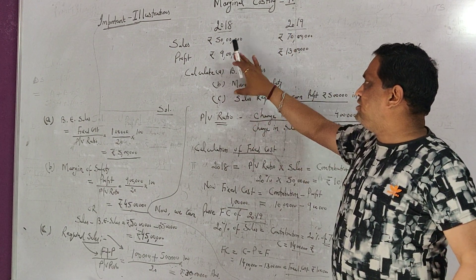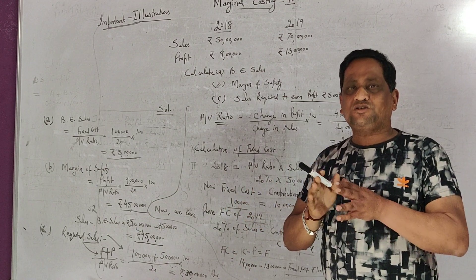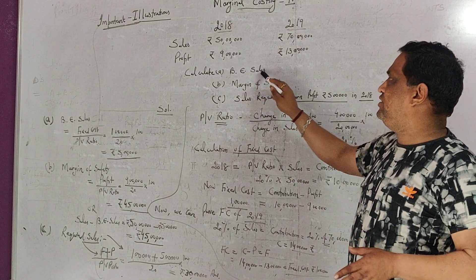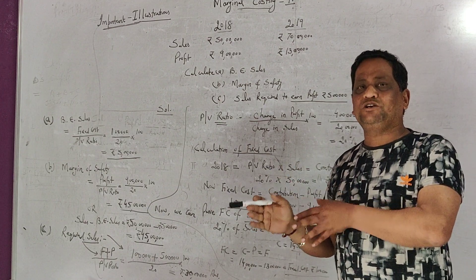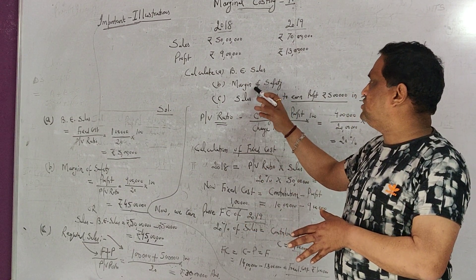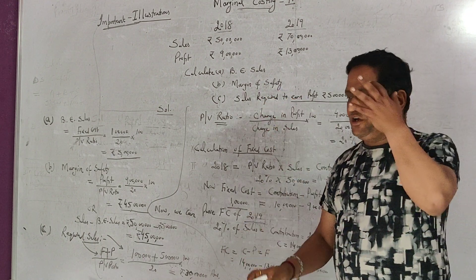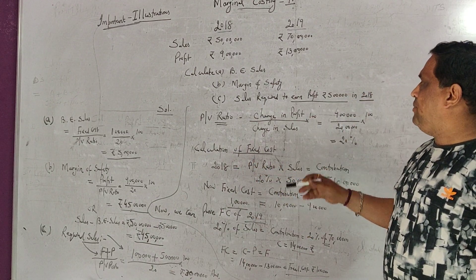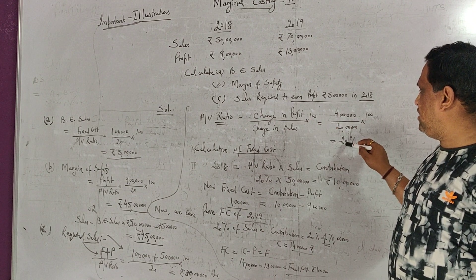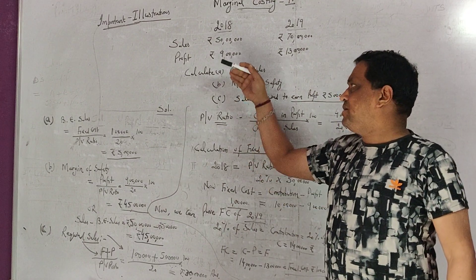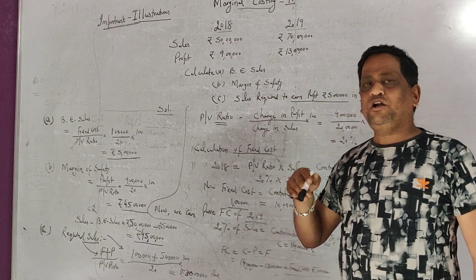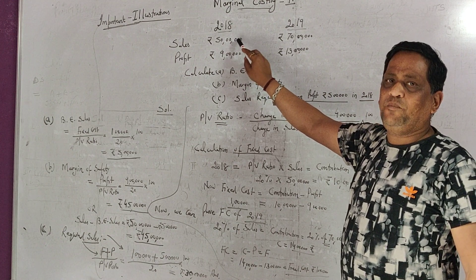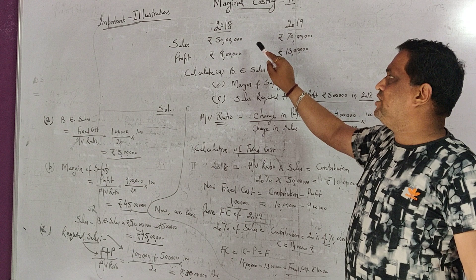We are now going to calculate fixed cost, because it is not given, and after that I will proceed with break-even sale, then margin of safety. The approach is: contribution = sales multiplied by PV ratio. So if we apply the 20% PV ratio to sales, the answer is contribution.